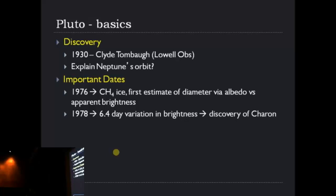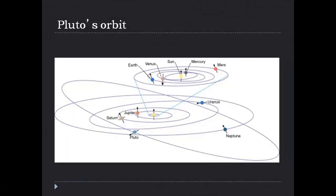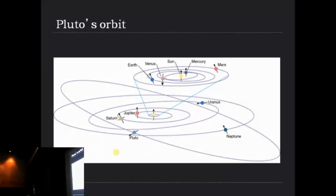Pluto was discovered in 1930 by Clyde Tombaugh at Lowell Observatory. It was thought to explain Neptune's orbit, but it turns out there was nothing wrong with Neptune's orbit. In 1976, people analyzing its spectrum discovered it had a surface of methane ice. In 1978, a 6.4-day brightness period revealed its moon, Charon. For those who know Greek mythology, Pluto was the god of the underworld, and to get there you crossed the river Styx, paying the boatman Charon — so that's how Pluto's moon got its name. Pluto's orbit has always been known to be odd — it is inclined with respect to the solar system.